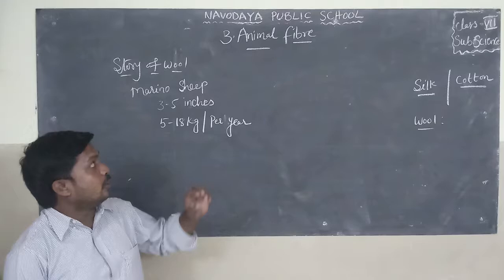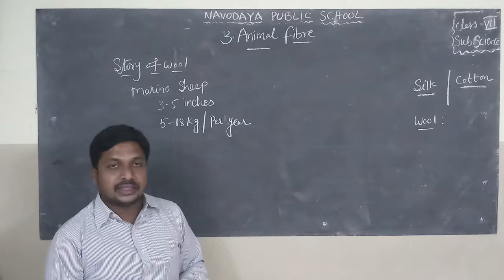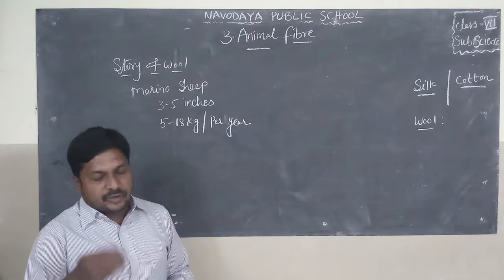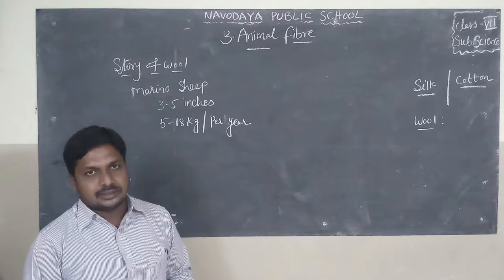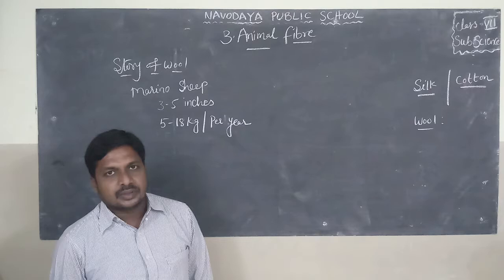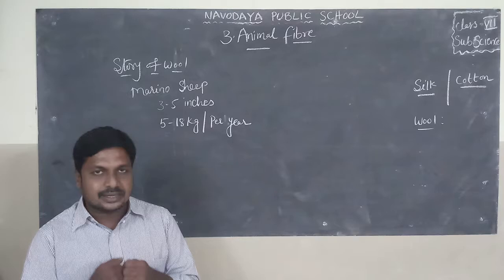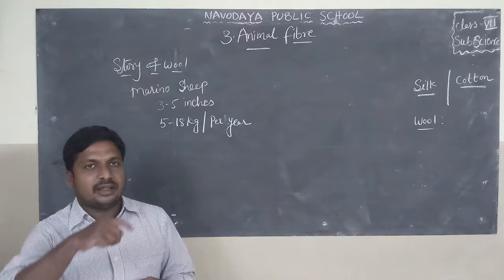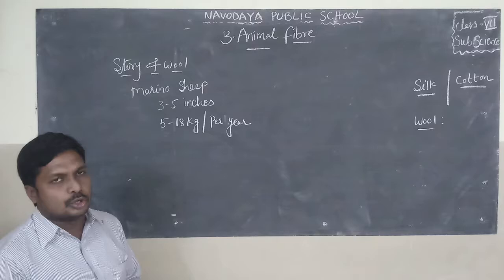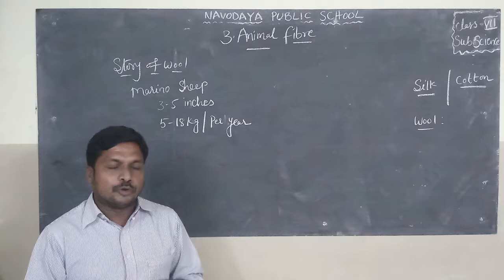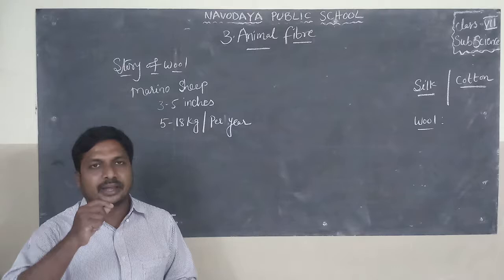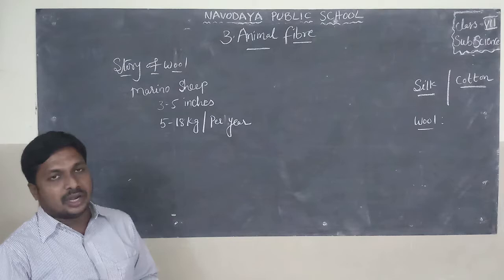Good morning children. In the previous class, I explained about science — the third lesson on animal fiber, specifically the story of silk. The scientific name of the silk moth is Bombyx mori. The female silk moth lays 500 eggs at a time; these develop into larvae that eat mulberry leaves vigorously, increase in size, produce fine thread, and spin around themselves to form a cocoon. Cocoons are stifled to produce silk. If not stifled, the moth makes a hole and comes outside, resulting in poor quality silk.